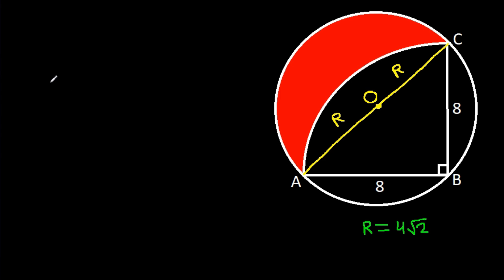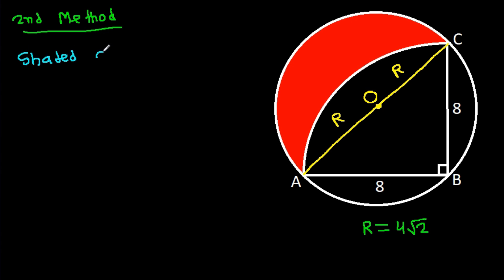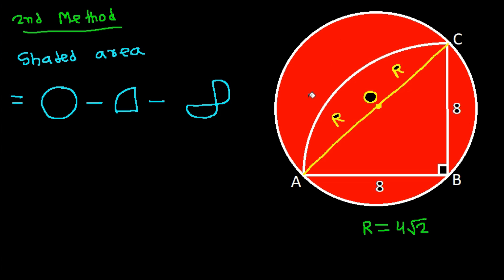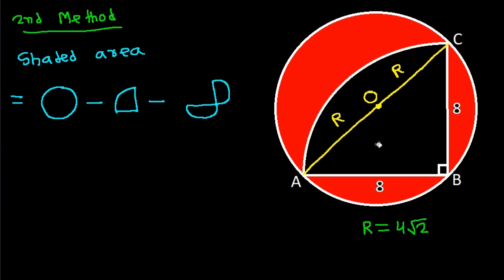Now for the second method: we can say the shaded area is equal to the area of the circle, minus the area of the quarter circle, minus the area of these two segments.